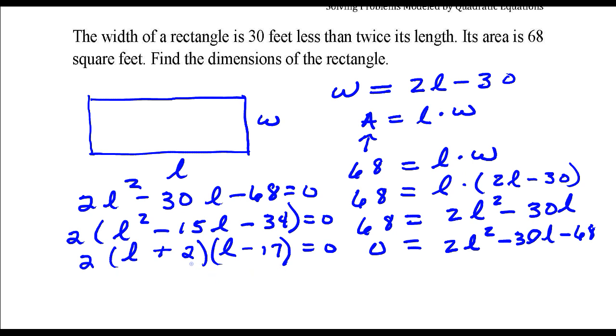So let's check this. 2 times negative 17, that's negative 34. 2 plus negative 17, that's negative 15. So that's the correct factorization.